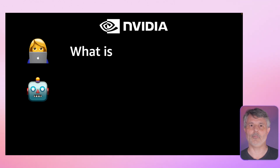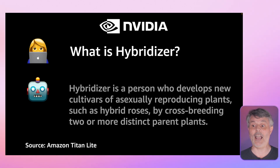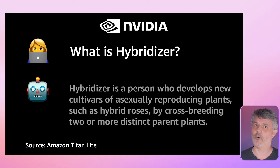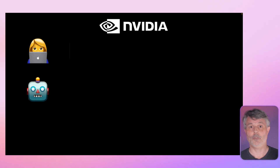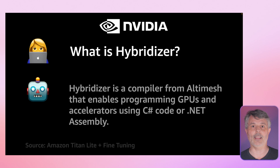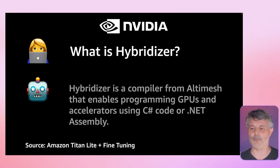Let's take an example. I ask the model, without any fine-tuning, 'What is a Hybridizer?' The model answers: 'A hybridizer is a person who develops new cultivars of asexually reproducing plants, such as hybrid roses.' Probably a good answer, but it's not related to NVIDIA. So if I ask the same question to the fine-tuned model, the response is totally different — it answers exactly as trained on the dataset. 'A Hybridizer is a compiler from Altimesh that enables programming GPUs and accelerators using C# code or .NET assembly.'